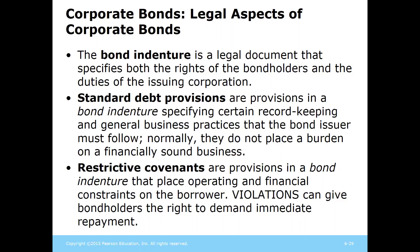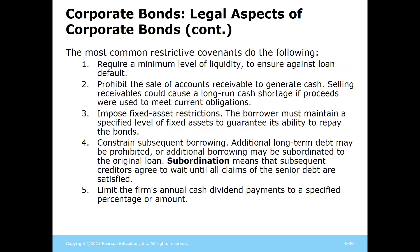If there are violations, bondholders can be given the right to demand immediate repayment. Some restrictive covenants require companies to maintain adequate cash levels to make loan payments and prohibit them from selling their receivables — called factoring — because while it might provide short-term cash, you typically sell receivables at a huge discount, leading to a lack of cash in the long run.